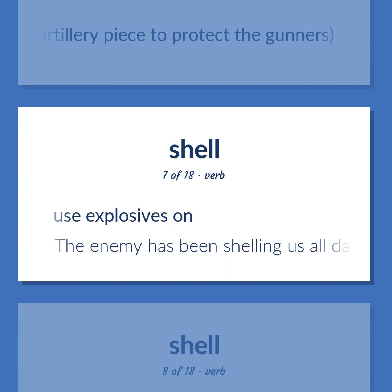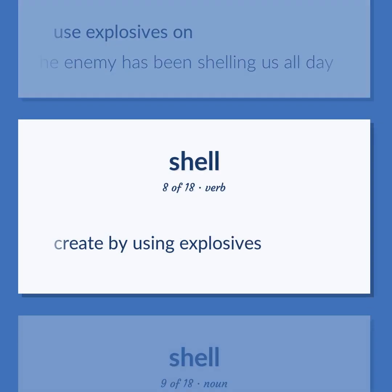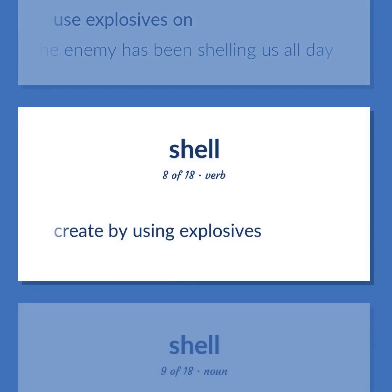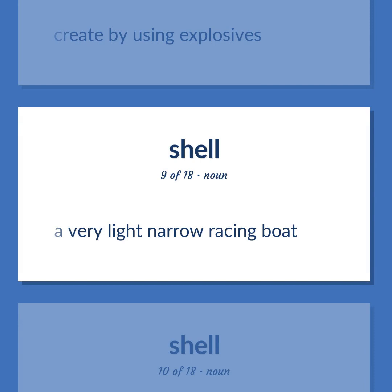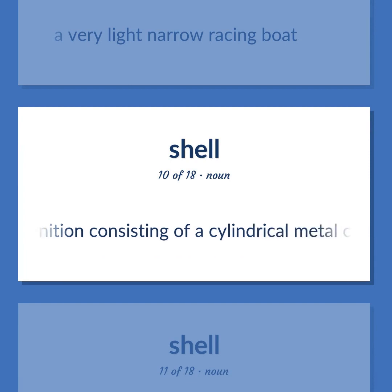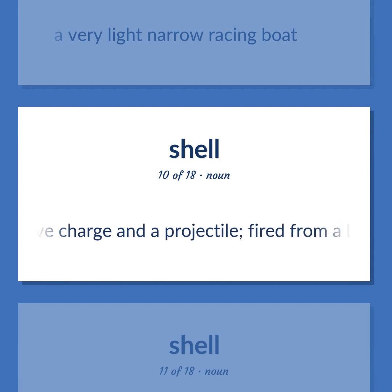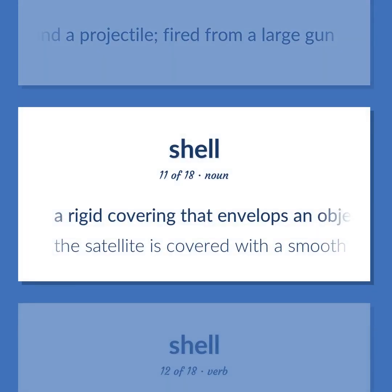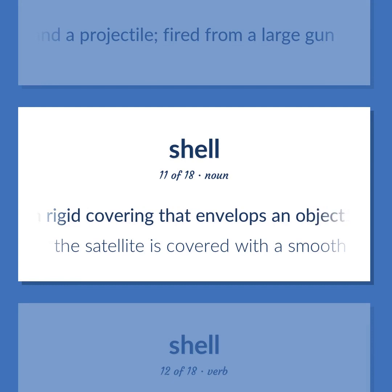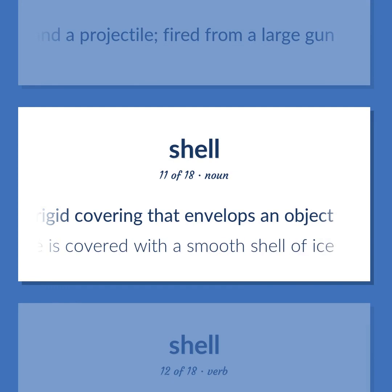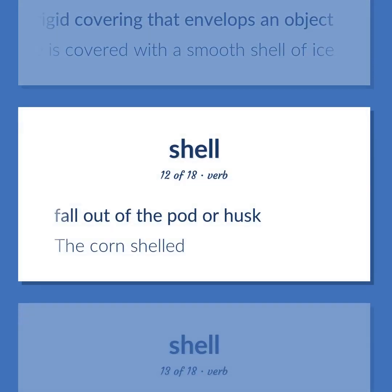Shell: Use explosives on — the enemy has been shelling us all day. Create by using explosives. A very light narrow racing boat. Ammunition consisting of a cylindrical metal casing containing an explosive charge and a projectile, fired from a large gun. A rigid covering that envelops an object — the satellite is covered with a smooth shell of ice. Fall out of the pot or husk — the corn shell.